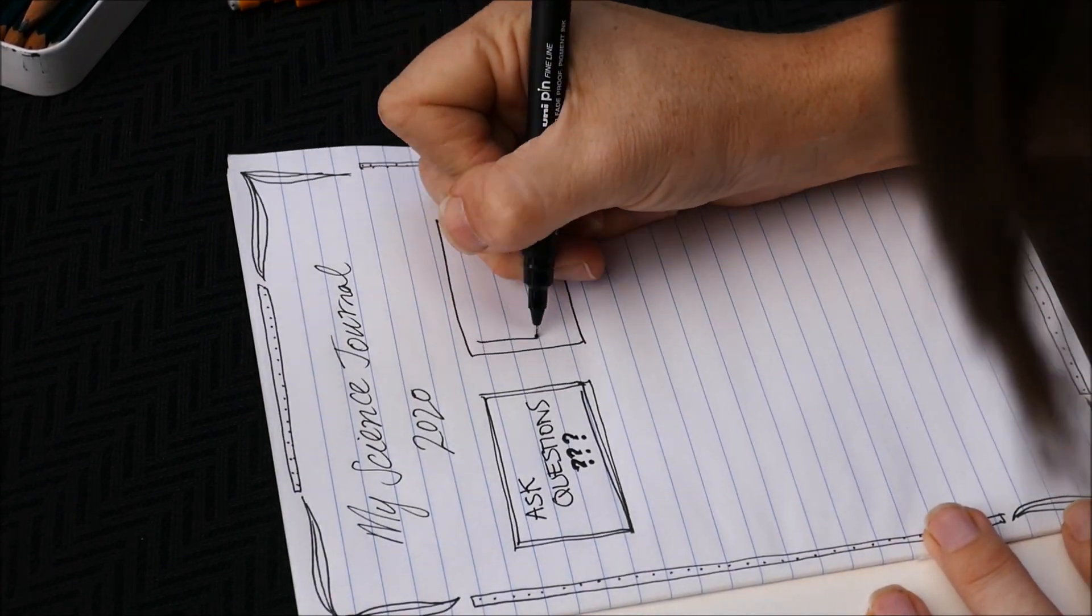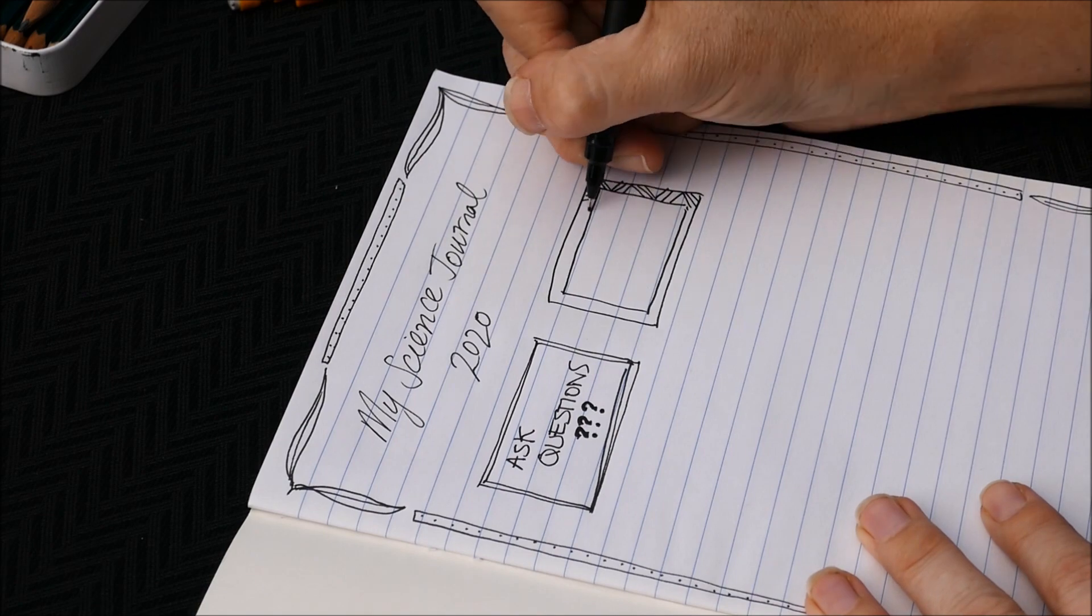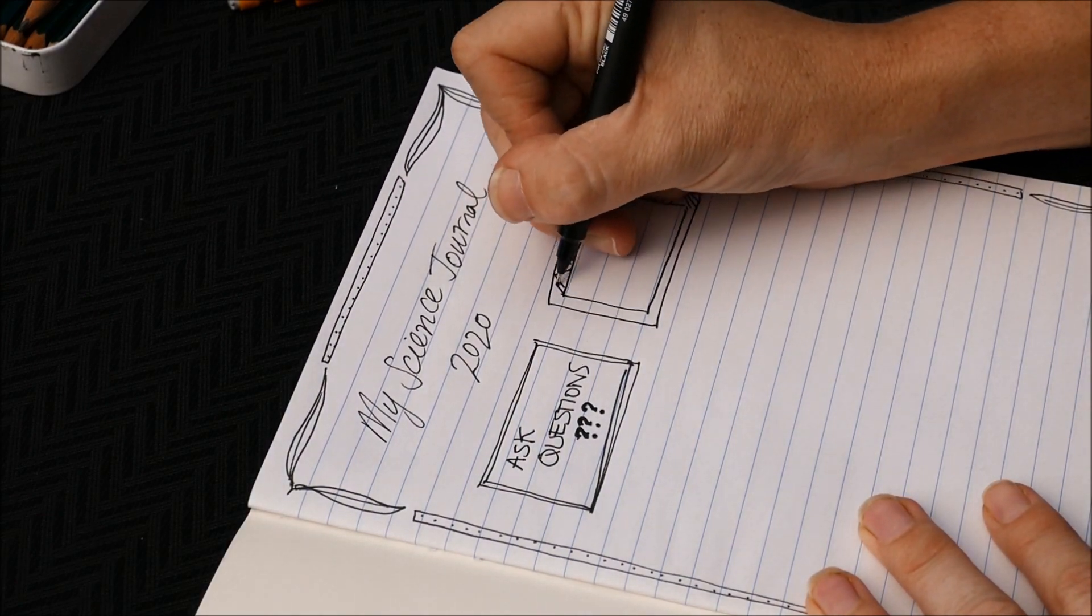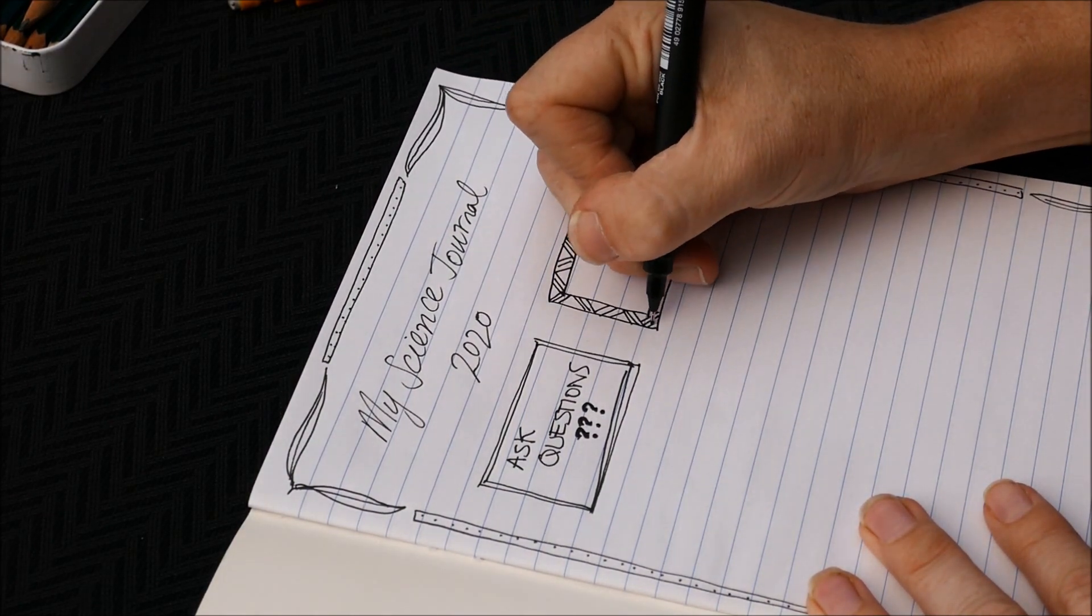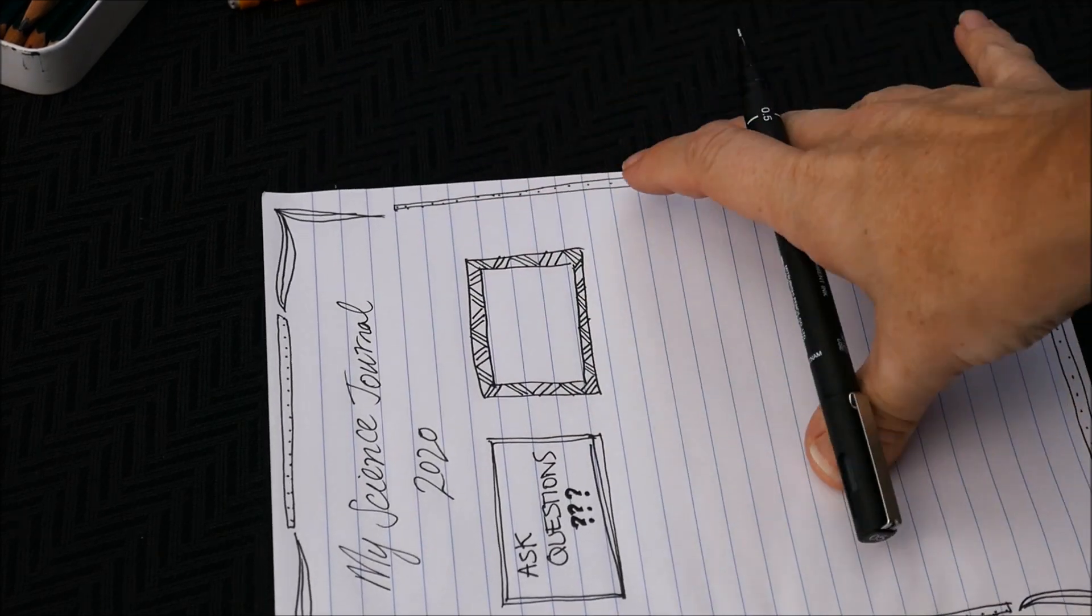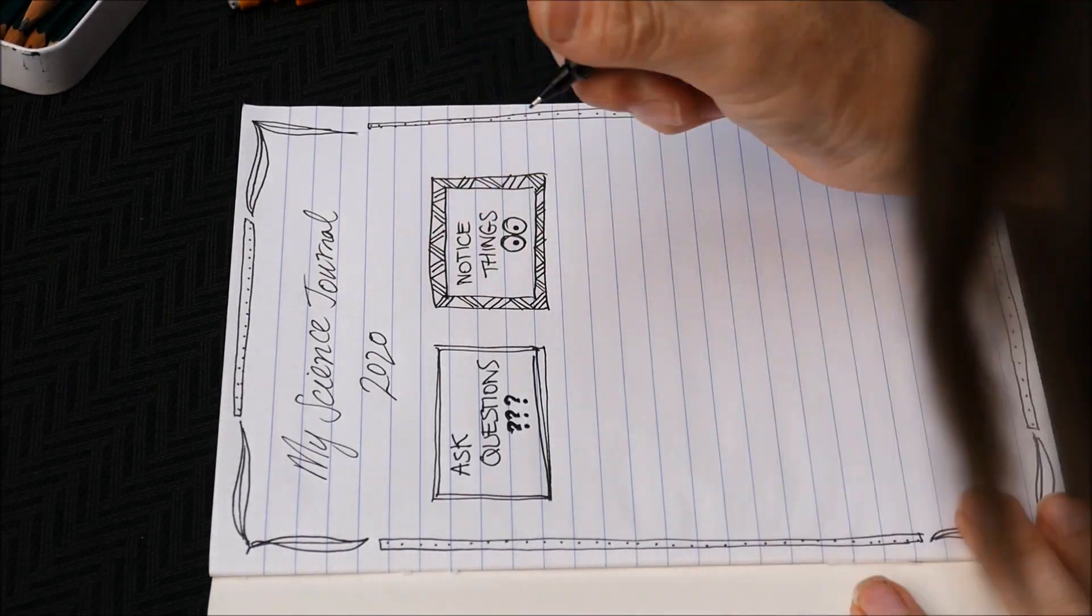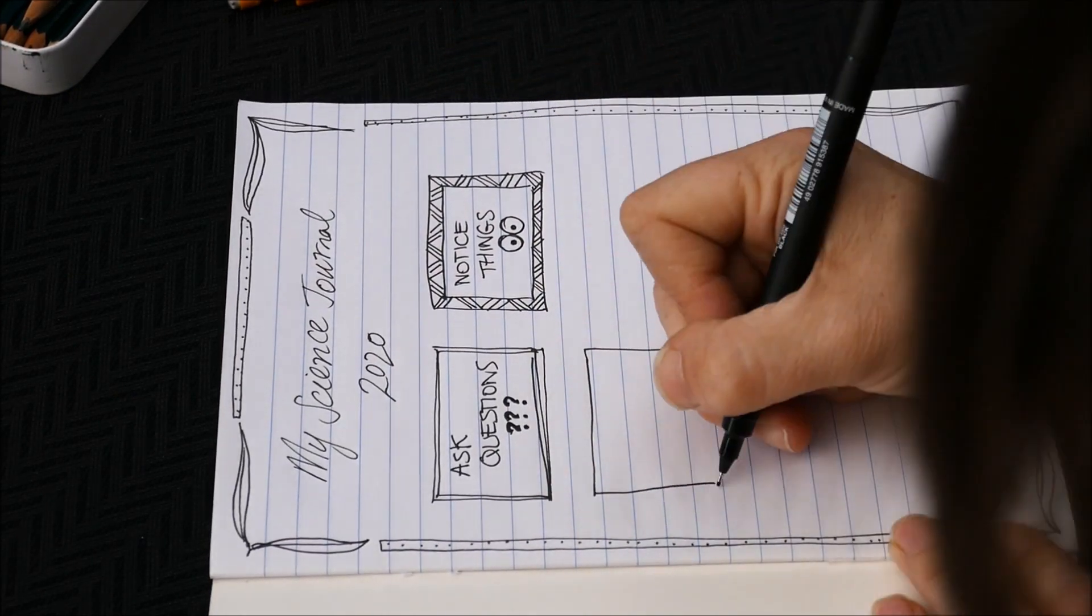On the front page of my book I just put some little reminders of things that you can include when you're doing a science journal. The first box there says ask questions and that is the first step for every scientist. Look around you, see things in your life and then ask questions about how they work. And that leads on to the second one there which says notice things.